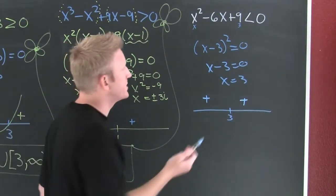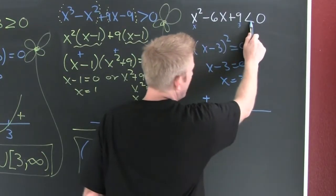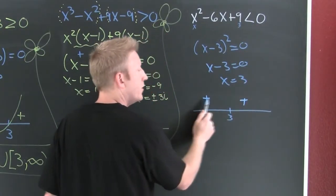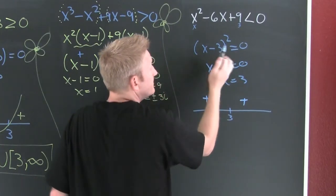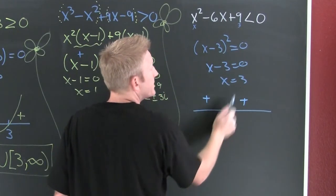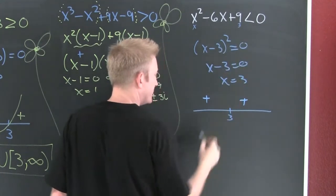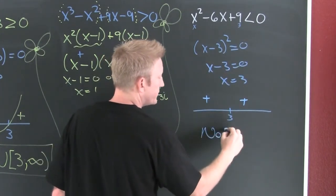So now I flash back to my original equation. Where is this smaller than zero? Over here? No. Over here? No. At three, this is zero. But do I include it? I don't. So this is no solution.